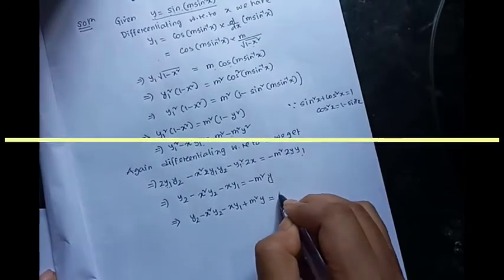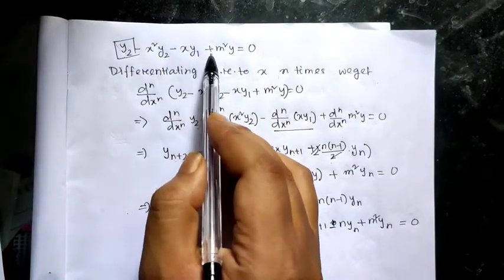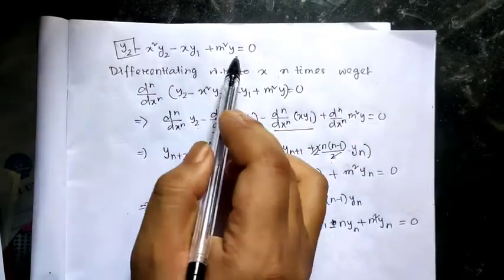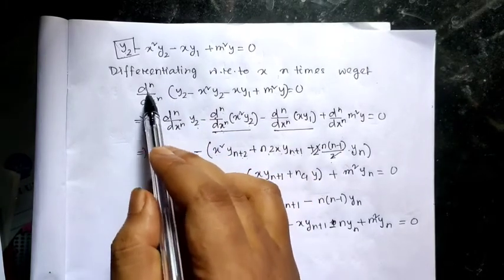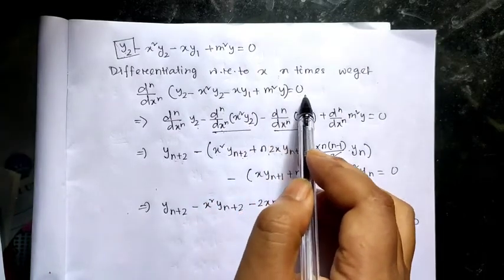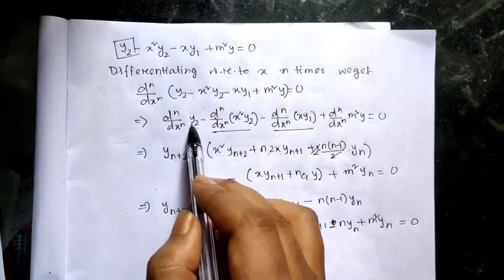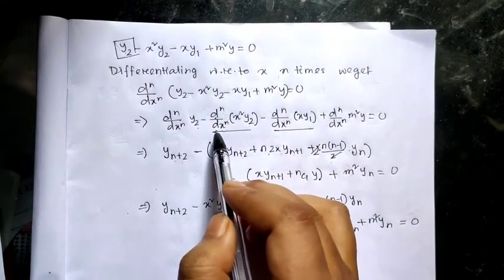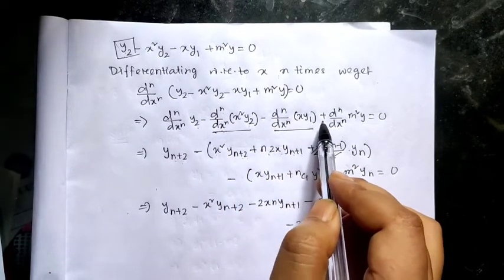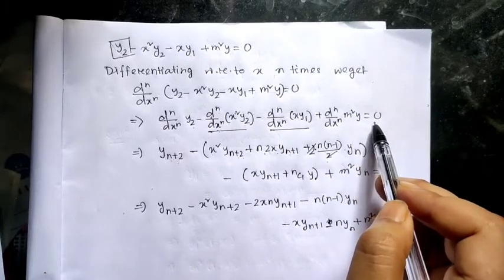Now differentiating this equation y₂ minus x squared·y₂ minus x·y₁ plus m squared·y equals zero with respect to x, n times, we apply the nth derivative operator. Distributing the operator: d^n/dx^n of y₂, minus d^n/dx^n of (x squared·y₂), minus d^n/dx^n of (x·y₁), plus d^n/dx^n of (m squared·y) equals zero.